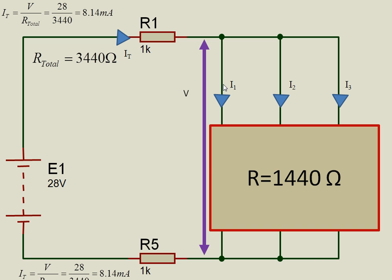If I want to calculate the voltage across the parallel network, I use Ohm's law, which says V is equal to I times R. So it's 8.14 milliamps multiplied by 1,440 which gives me 11.72.